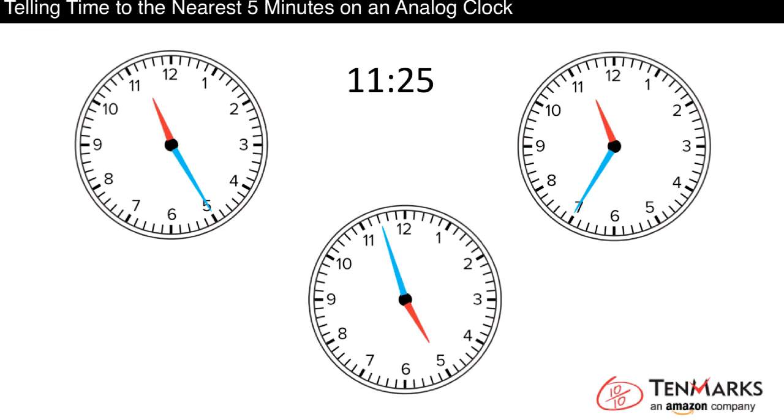Which of these clocks shows 11:25? Remember that the hour hand is short. Notice where the hour hand is on each clock. On the top two clocks, the hour hand is between the 11 and the 12. So the hour is 11 because it is the number before the hand. One of these two clocks might show 11:25.